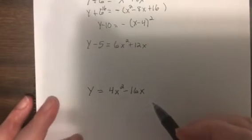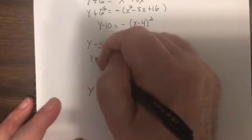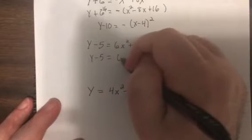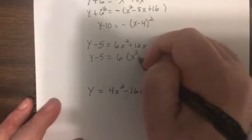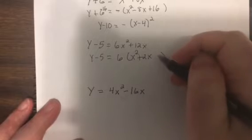So, next one. So, I need to factor out a 6. Again, do it yourself first. So, half of 2 is 1, 1 squared is 1.